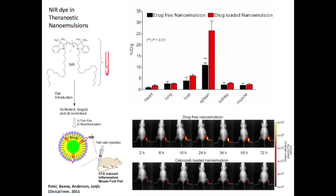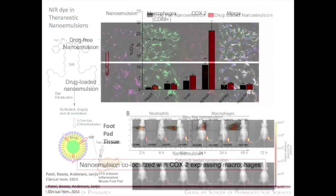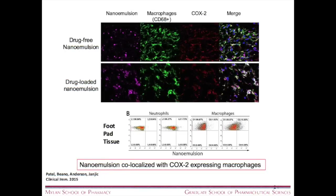We also studied biodistribution: as macrophages decreased at the site of inflammation, macrophages in the spleen increased, suggesting we truly changed macrophage behavior in vivo and we can measure that. Collaborators from the University of Pittsburgh — Dr. Bino and Dr. Anderson — ran histological analysis and co-registered in tissue both drug-free and drug-loaded nanoemulsions, which appear as purple, with macrophage markers CD68 and COX-2. When we ran flow cytometry on these tissues, we found we primarily labeled macrophages — our nanoemulsions don't seem to label neutrophils or other cell types. Nanoemulsions co-localize with their target, COX-2-expressing macrophages.